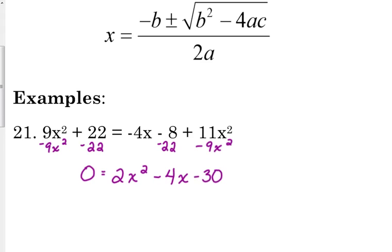Now, another suggestion that I have is before you start plugging things into the quadratic formula, go off to the side and write that a is 2, b is negative 4, and c is negative 30.